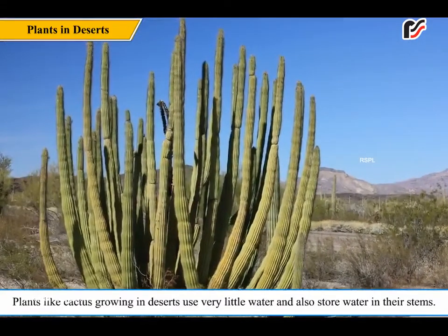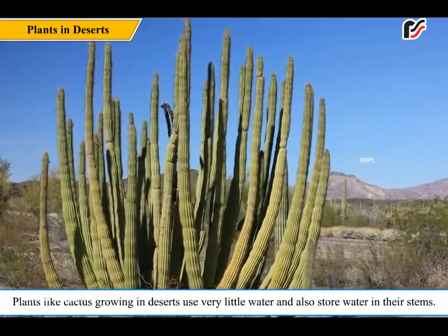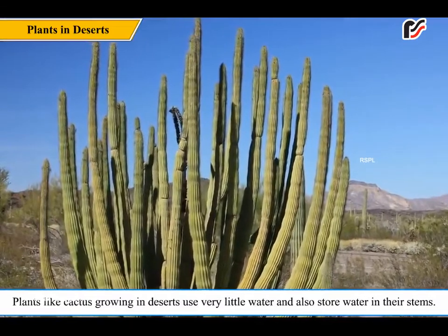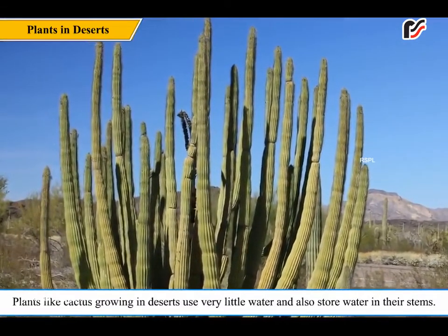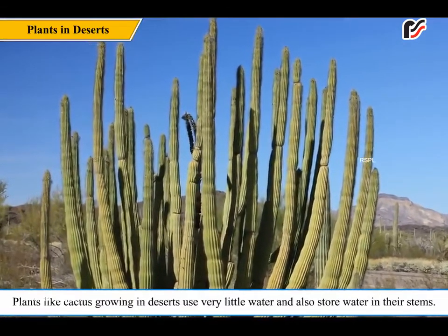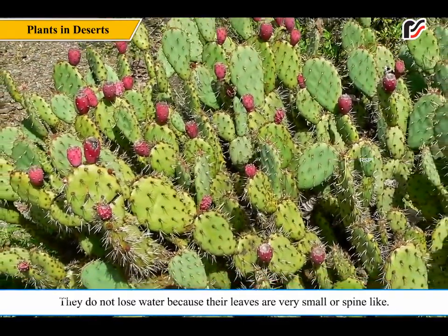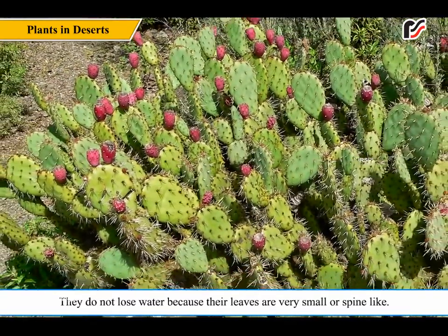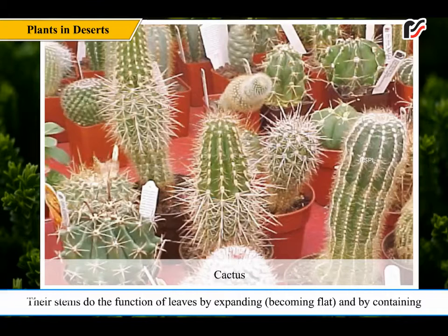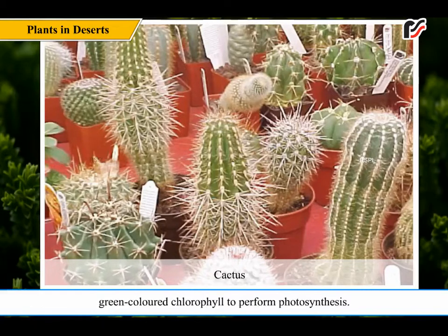Plants like cactus growing in deserts use very little water and also store water in their stems. They do not lose water because their leaves are very small or spine-like. Their stems do the function of leaves by expanding, becoming flat, and by containing green-colored chlorophyll to perform photosynthesis.